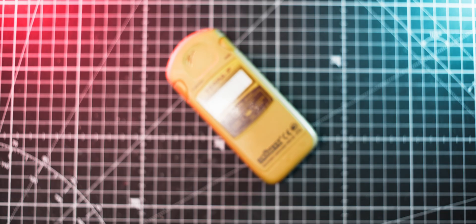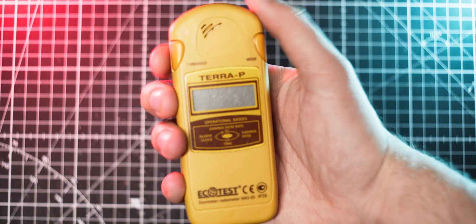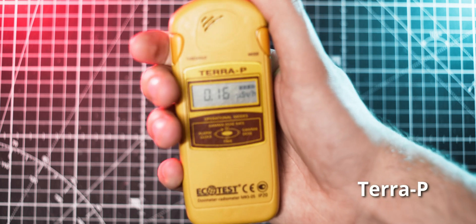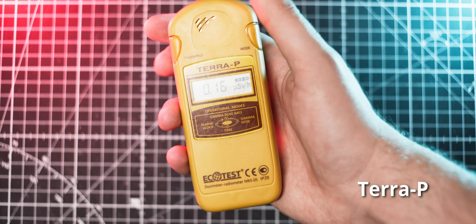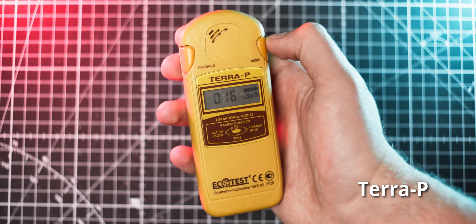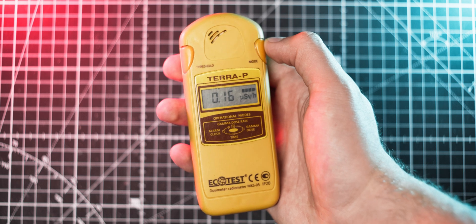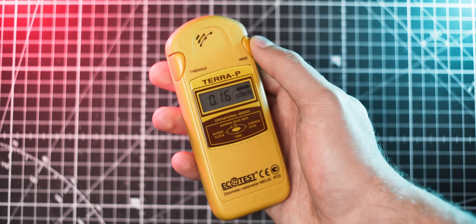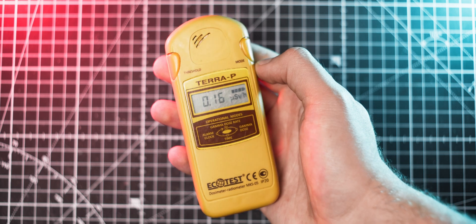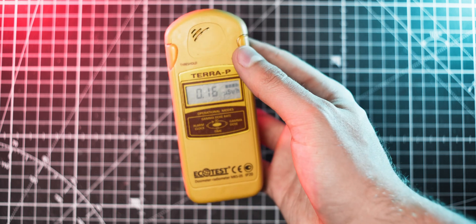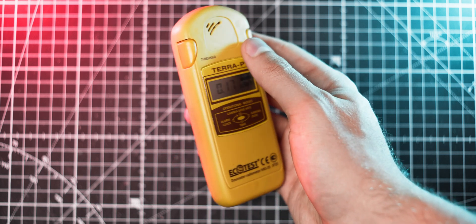Some Geiger counters, such as Terra-P, show the readings only in dose units, as they have been designed to be used in a nuclear-contaminated environment and quickly inform the user about the dose they are being exposed to. These readings can be widely inaccurate when measuring radiation coming from other isotopes to which the meter has not been calibrated to, due to the differences in gamma-ray energies coming from the different isotopes.